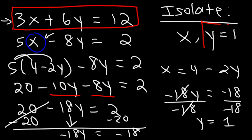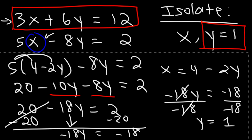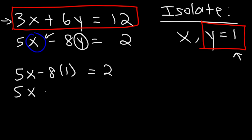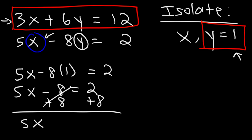That's half the battle. Now that we have the value of y, we can calculate the value of x. You could use either equation; let's use the second one. Replace y with 1: negative 8 times 1 is just negative 8. Add 8 to both sides: 2 plus 8 is 10. Divide both sides by 5: 10 divided by 5 is 2. So x is 2.